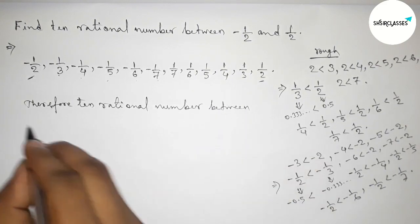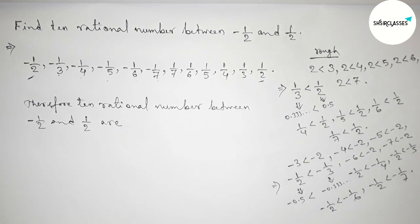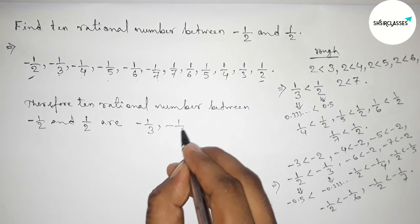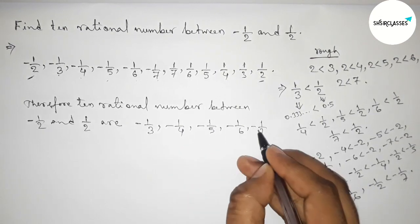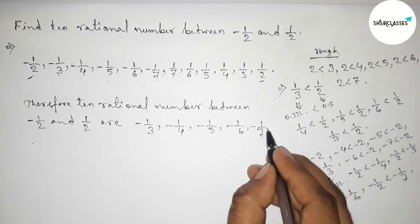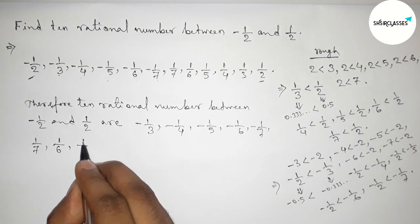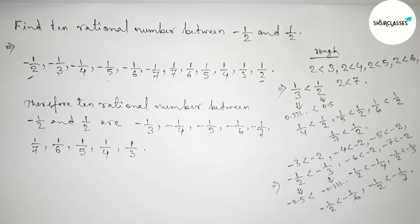Therefore the required 10 rational numbers between minus 1 by 2 and 1 by 2 are: minus 1 by 3, minus 1 by 4, minus 1 by 5, minus 1 by 6, minus 1 by 7, then 1 by 7, 1 by 6, 1 by 5, 1 by 4, and 1 by 3. That's all — thanks for watching. If this video is helpful to you, please share it.